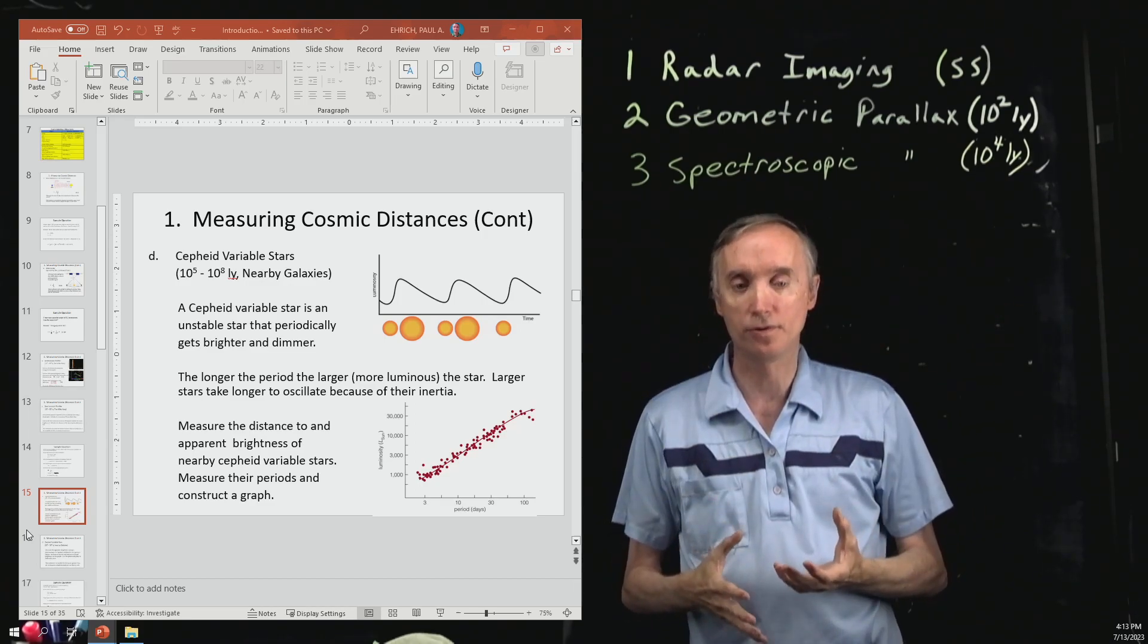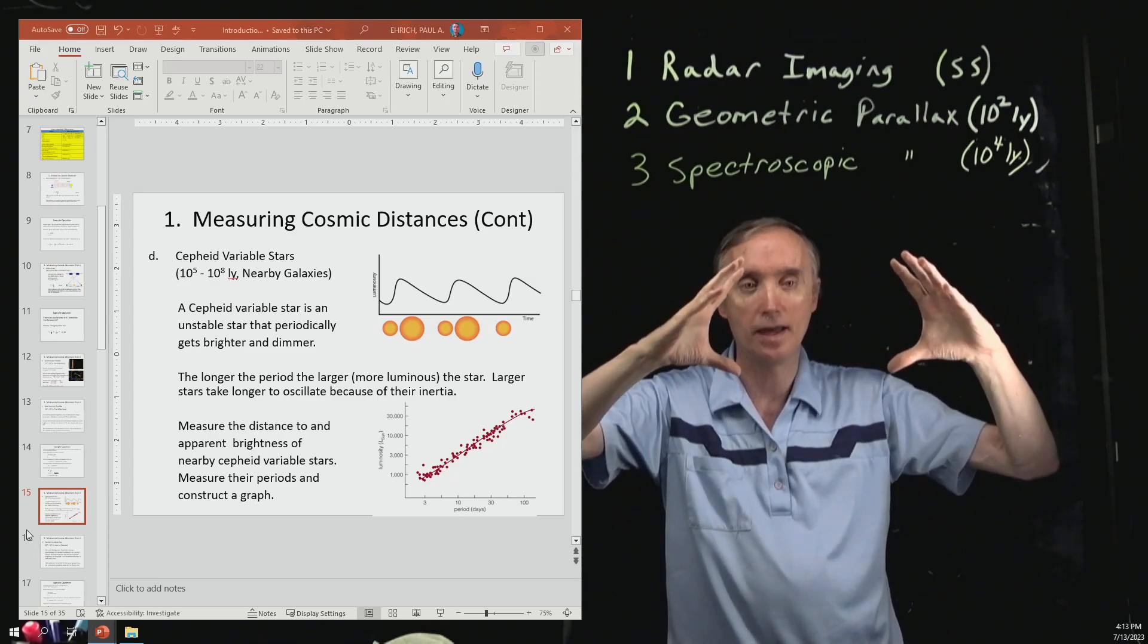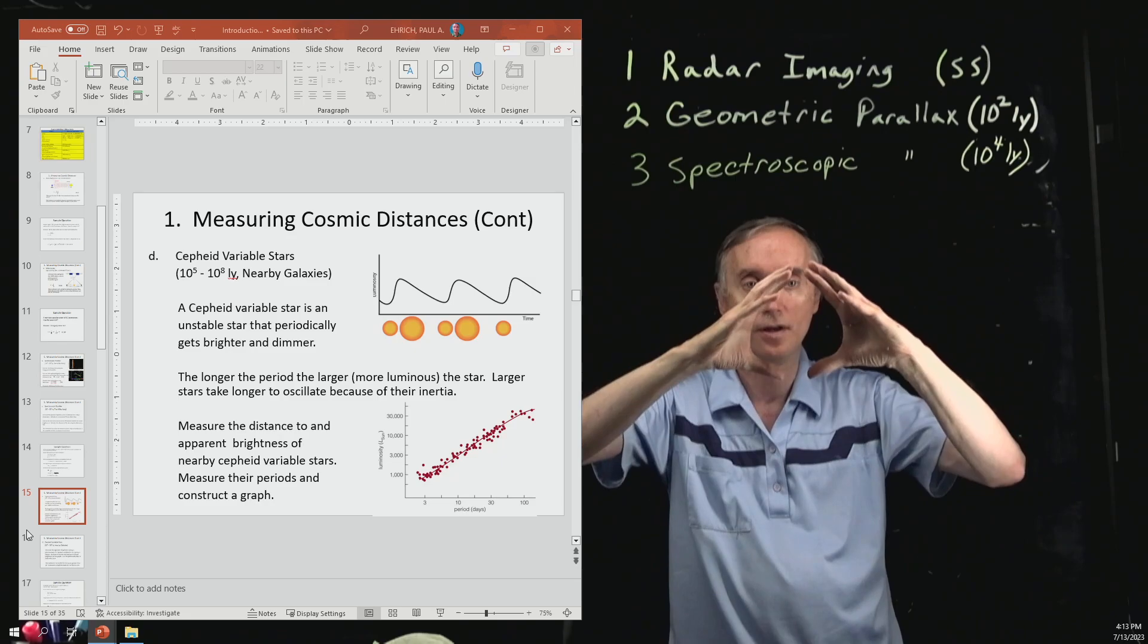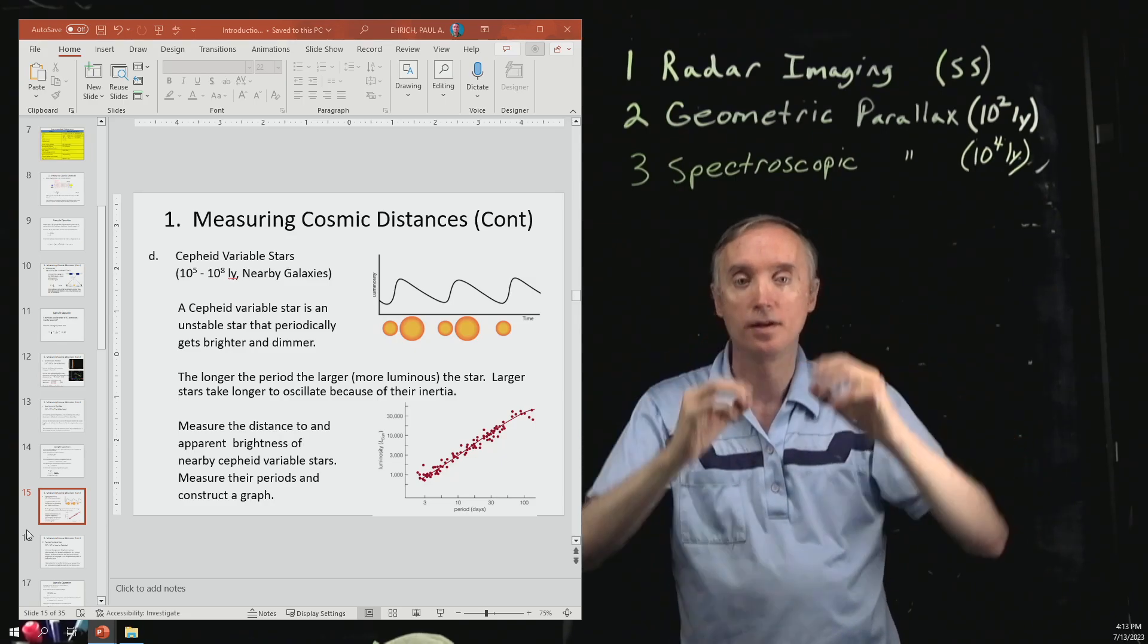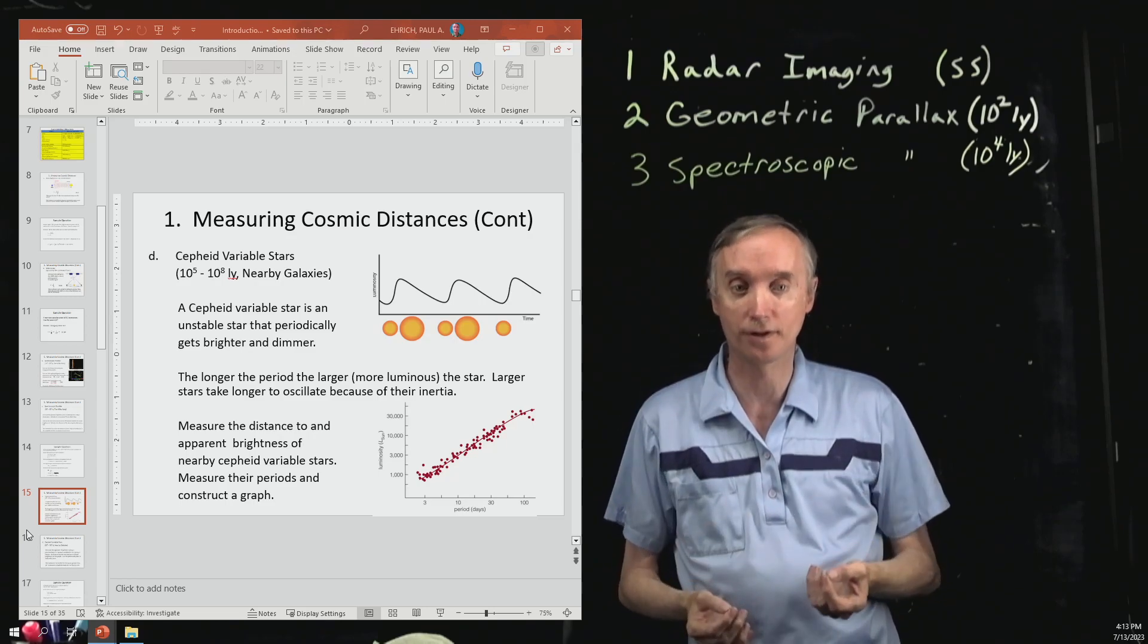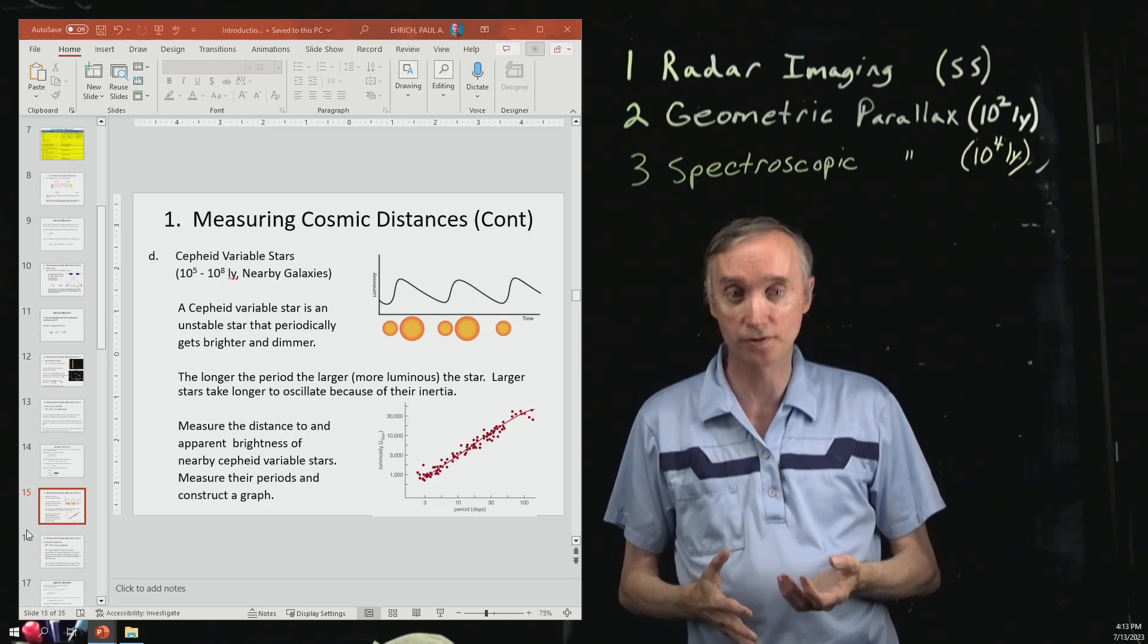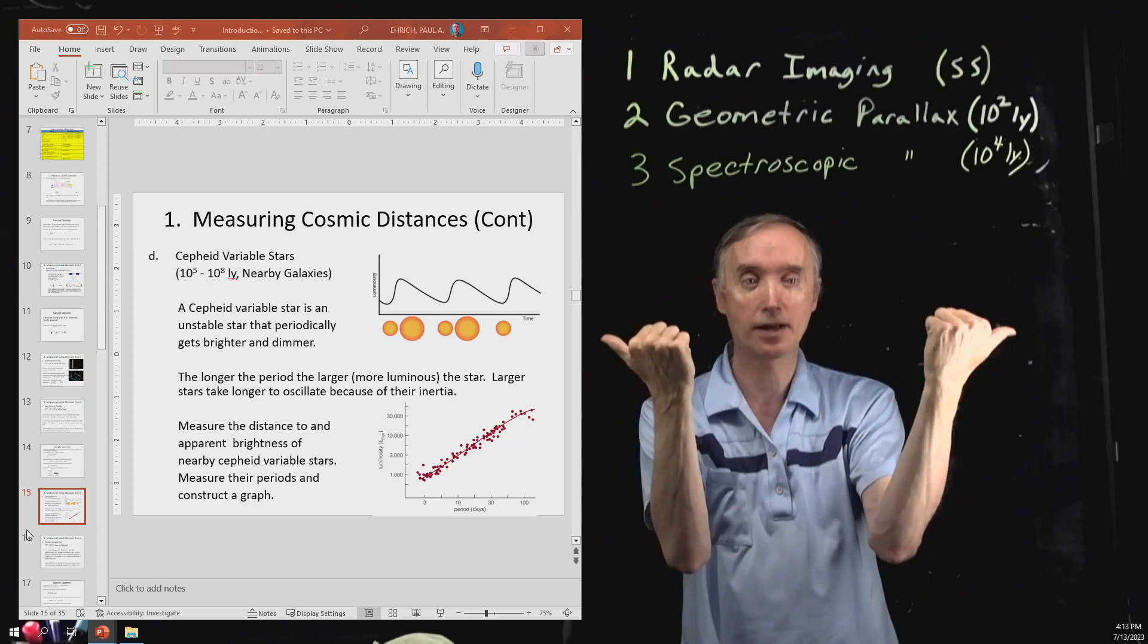In a Cepheid variable star, what happens is gravity starts to win and it starts getting smaller. But the smaller it gets, the more pressure is inside the star and the hotter it gets. And the hotter it gets, the more nuclear explosions there are, which are trying to push it back out again.